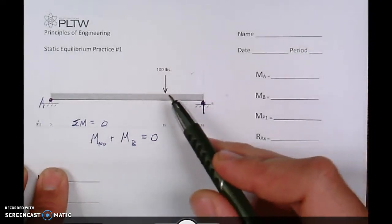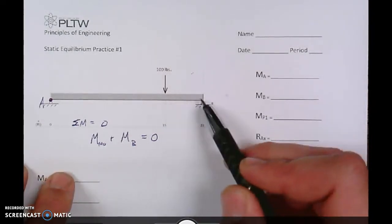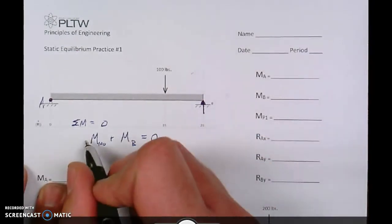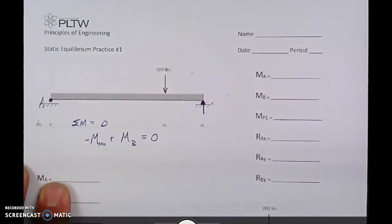We see that they're going in opposite directions, so that one of these has to be negative. We look at the 100 pound, it is clockwise. Clockwise means negative, so I'm going to put a little negative sign right there.